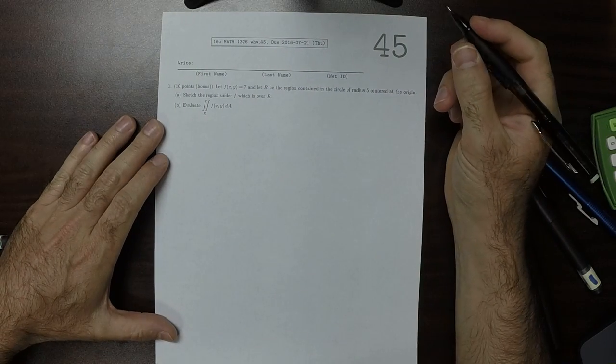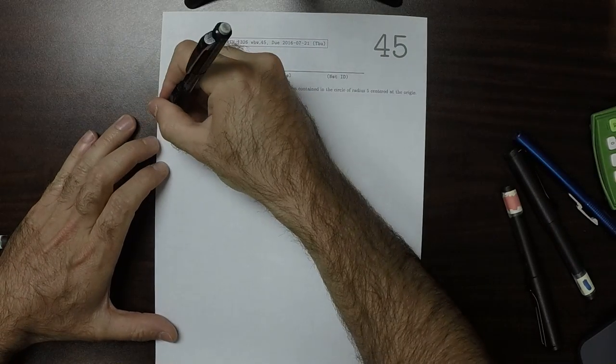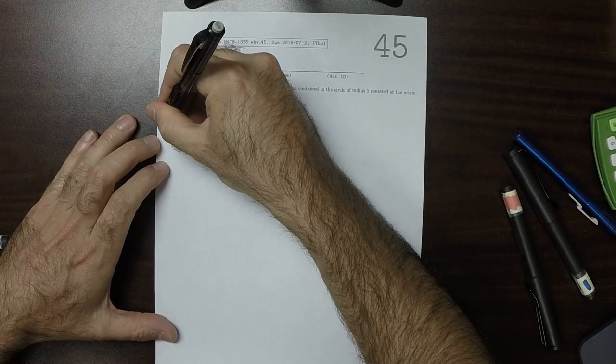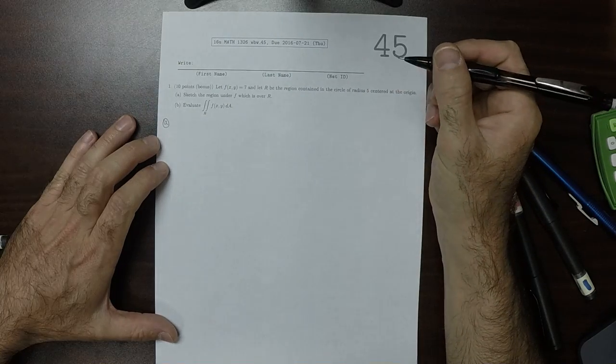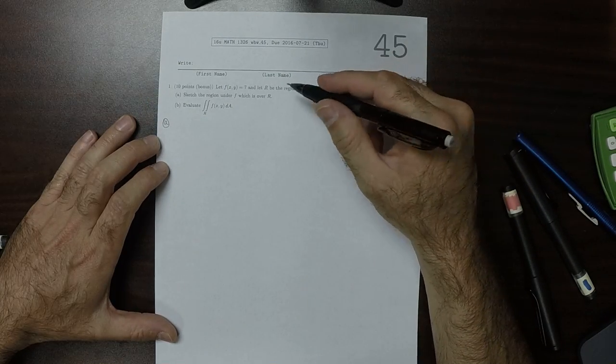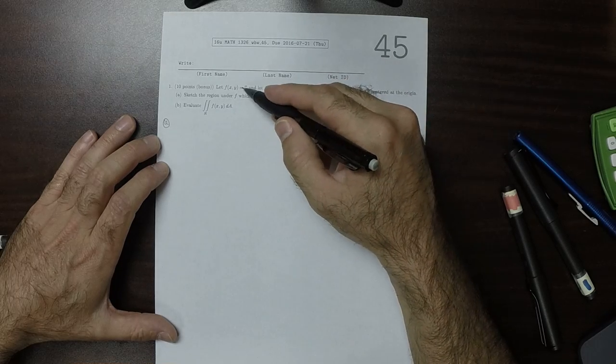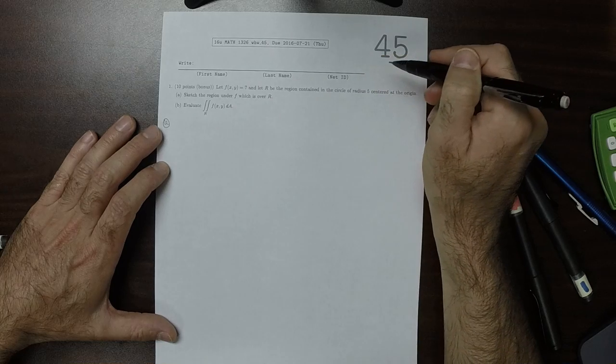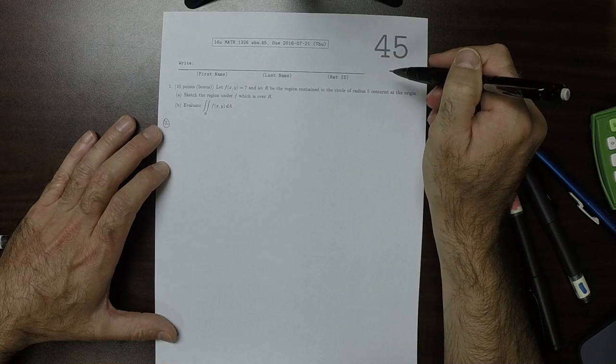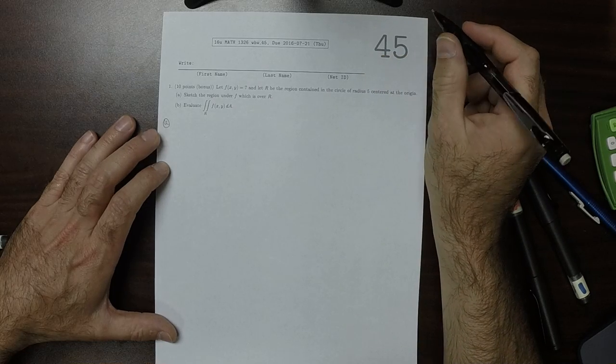This is the solution to written homework 45. For part A, it says let f of x and y be 7, and let R be the region contained in the circle of radius 5 centered at the origin.